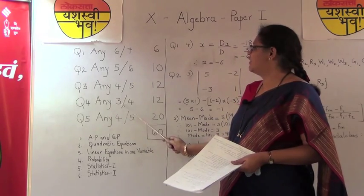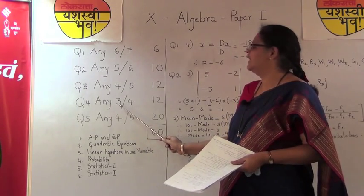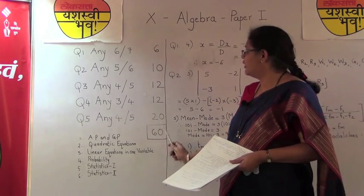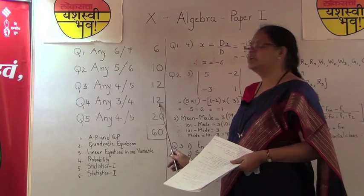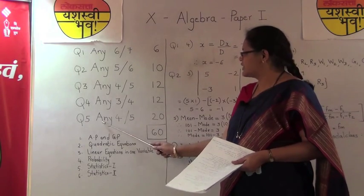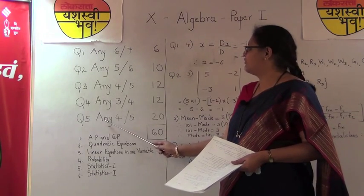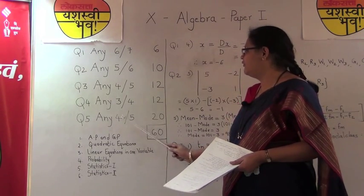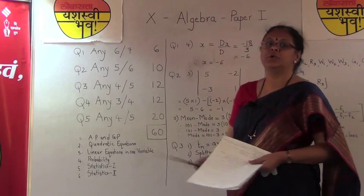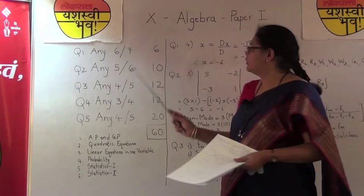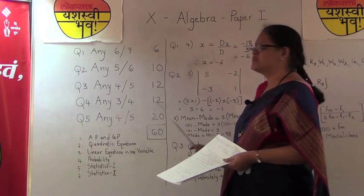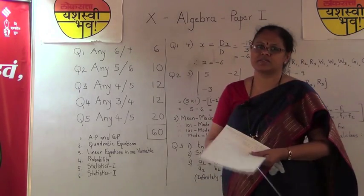Question number four, you have to attempt any three questions out of four, which would carry 12 marks. And the last question, you have to solve any four out of five, which would carry 20 marks. Together, your question paper would be of 40 marks.